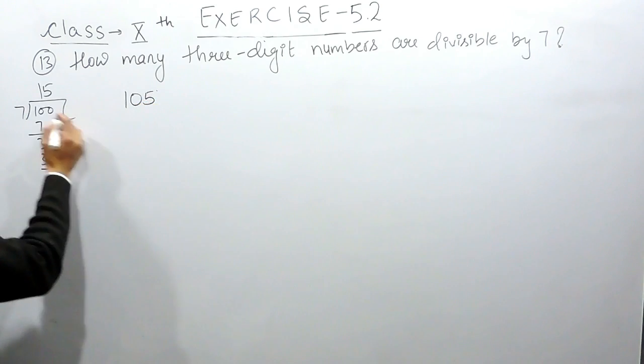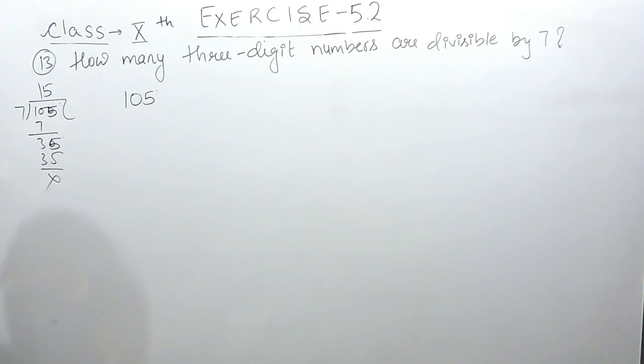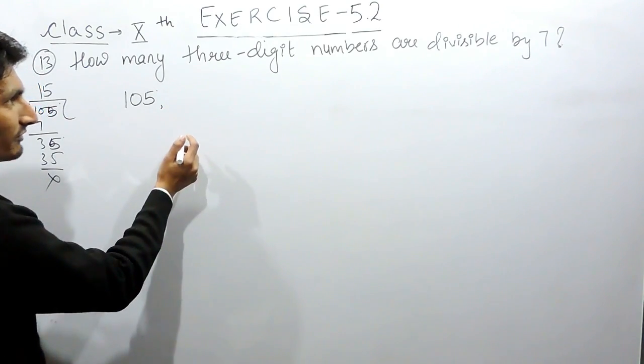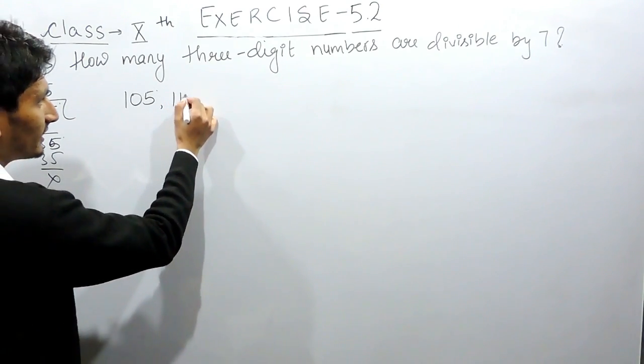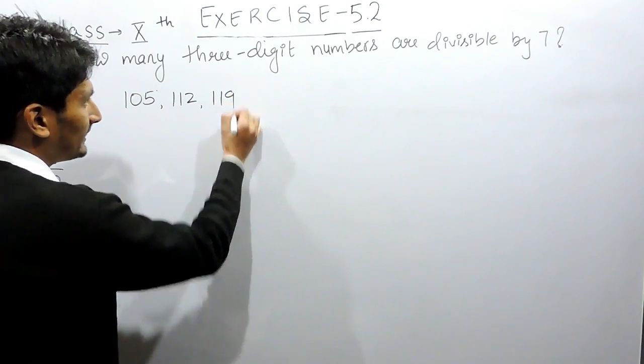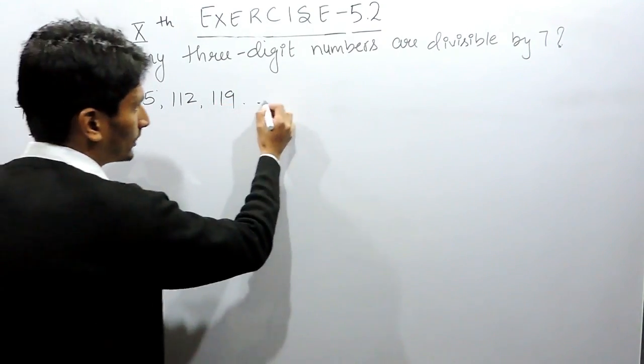So 105. Instead of this, if this is 5, this will be completely divisible by 7. So this is the first three-digit number which is divisible by 7, and the next number will be 7 more. So this will be 112 and 119 and so on.